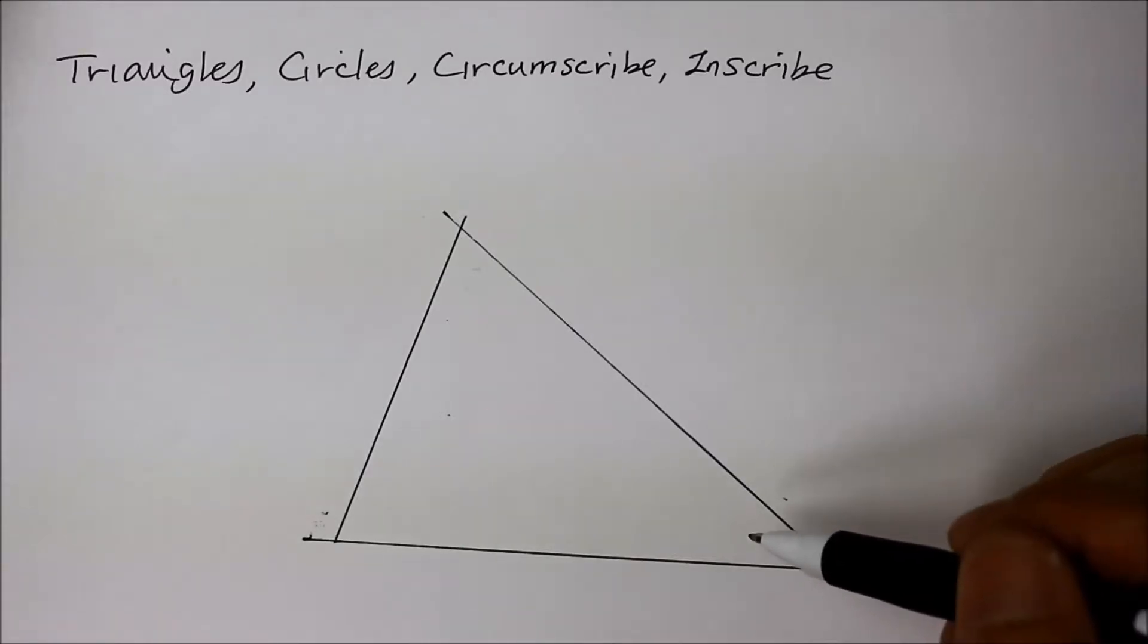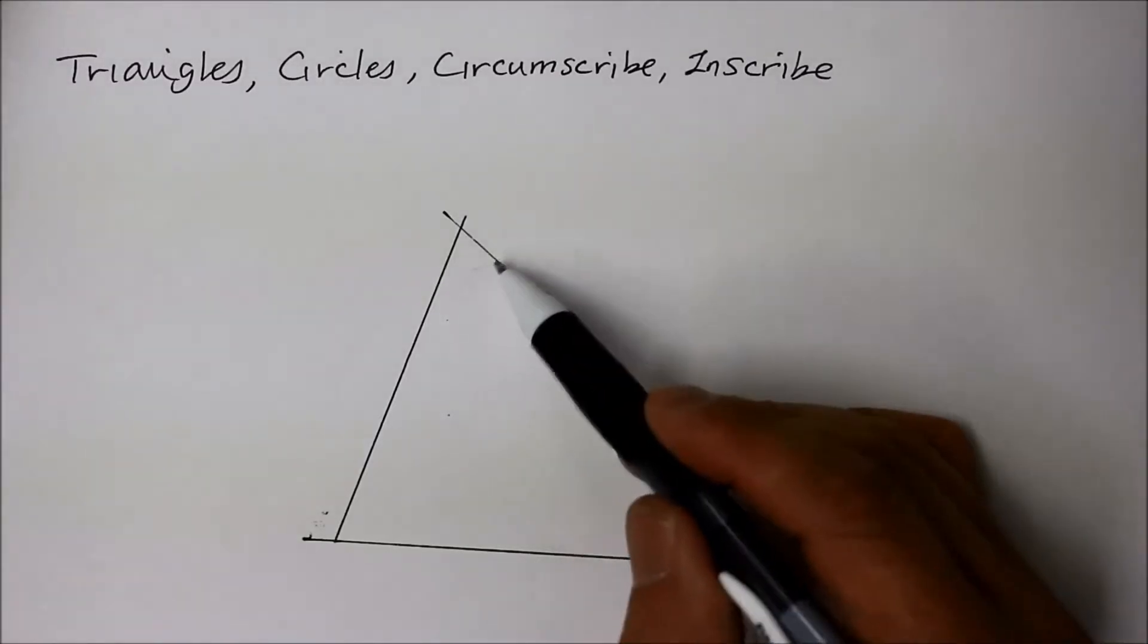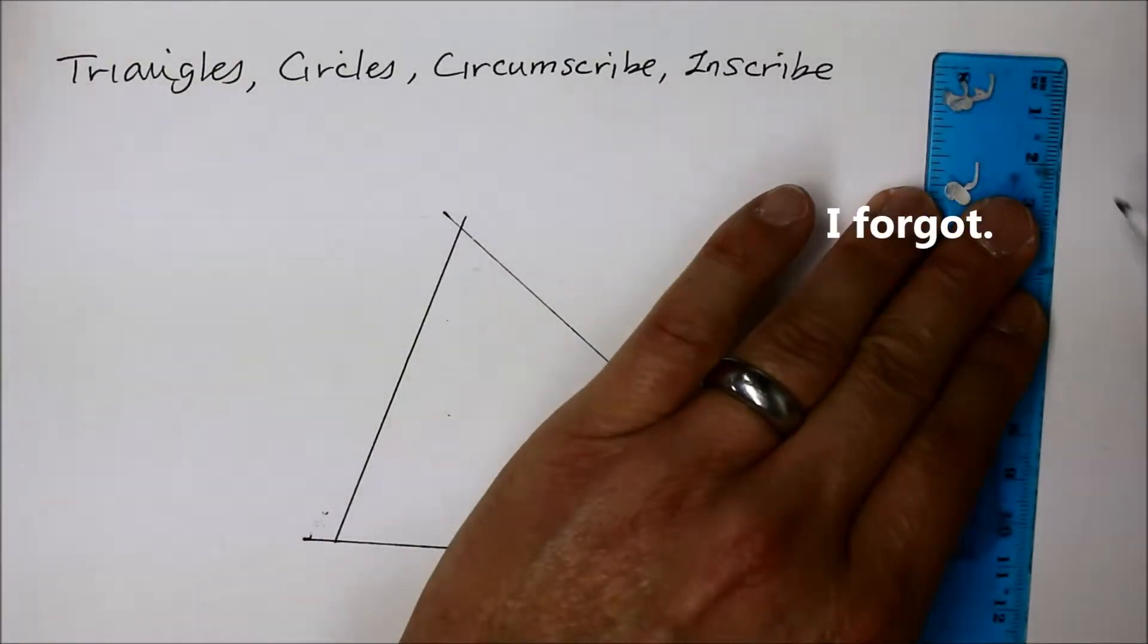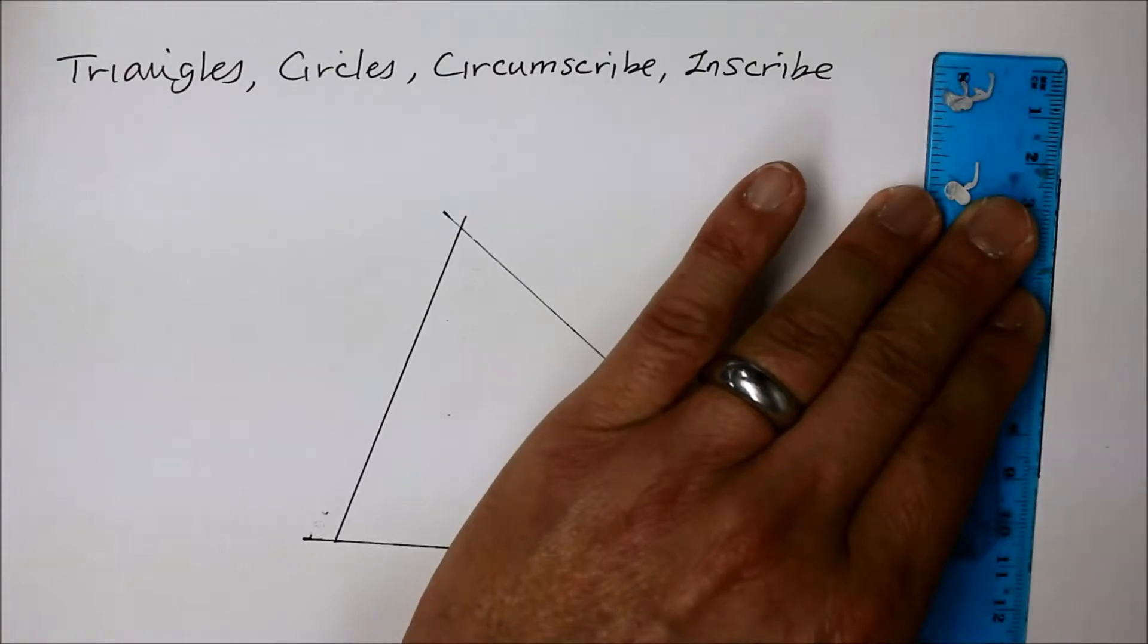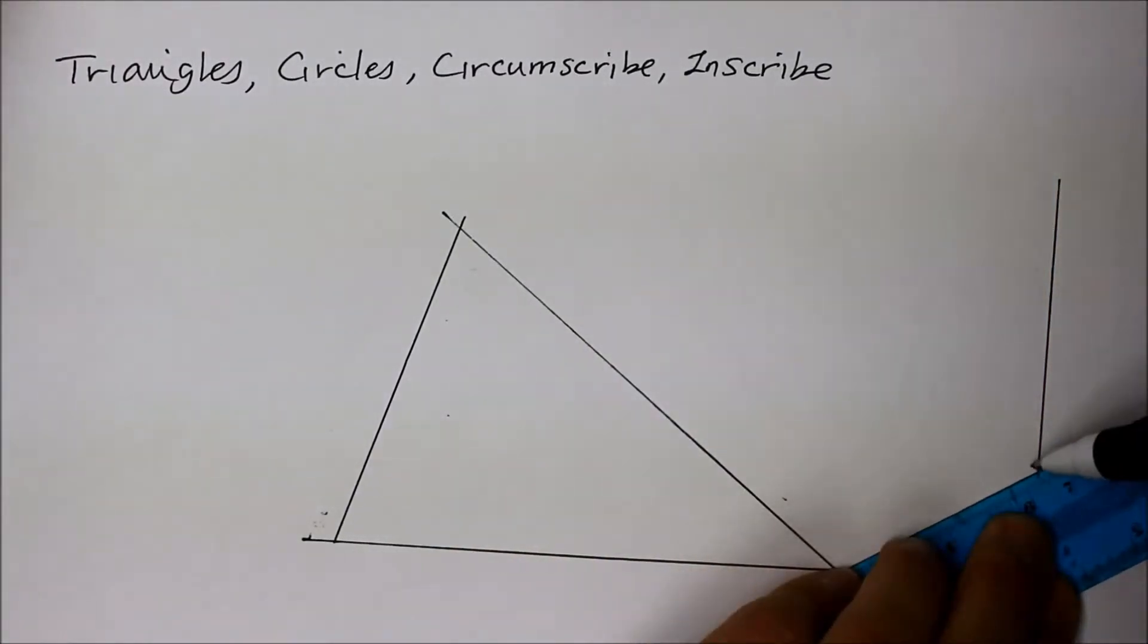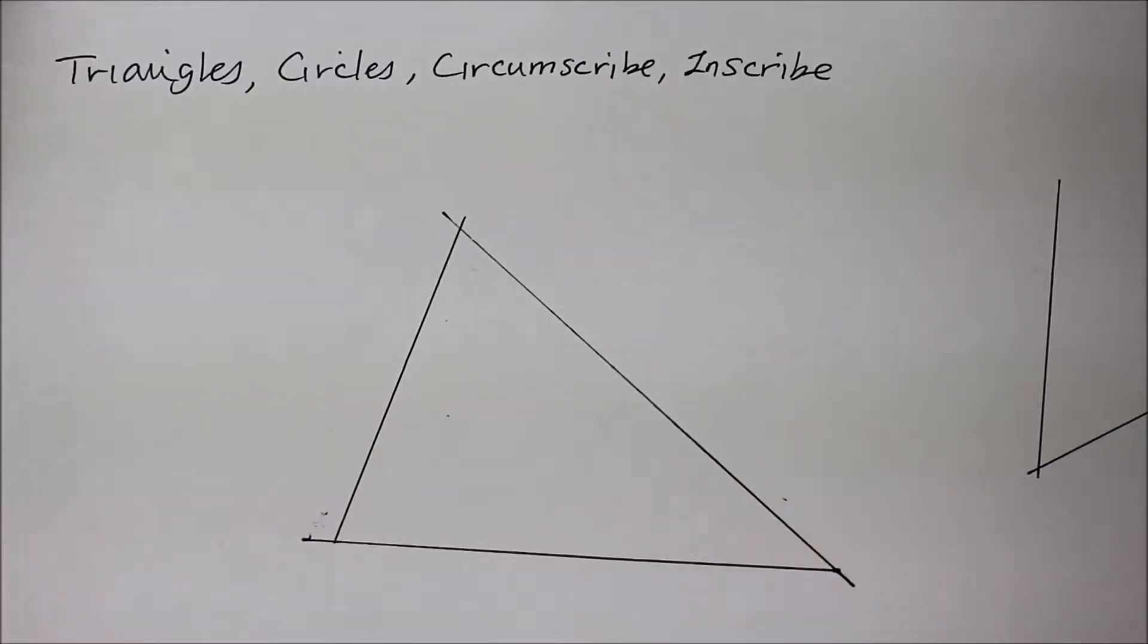Now, what I'm going to do is find an angle bisector for each of those vertices. Remember what that is? You may have learned this before you started algebra, or maybe if you're in geometry right now, you might have done a little review at the beginning of the school year.